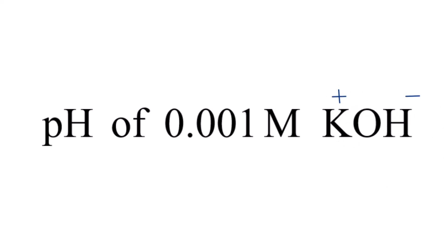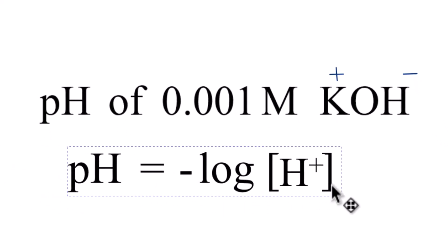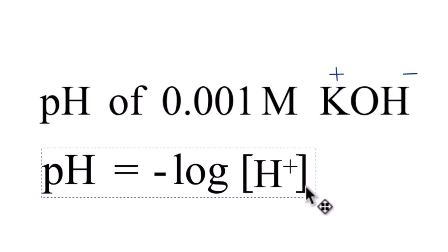So you might start looking to find the pH of the 0.001 solution of KOH with this equation. The problem is we have H plus here. This is the hydrogen ion. That's the H in pH. But we don't have the hydrogen ion here. We have the hydroxide ion. So this won't work.